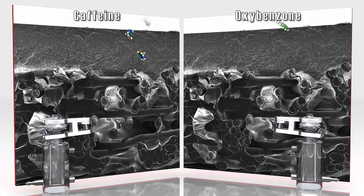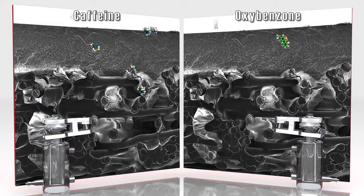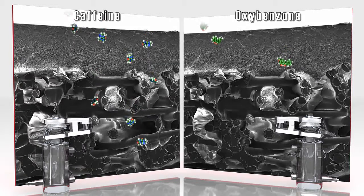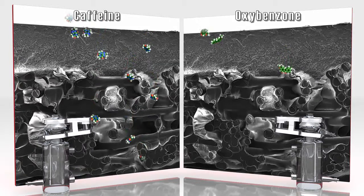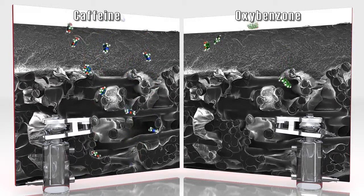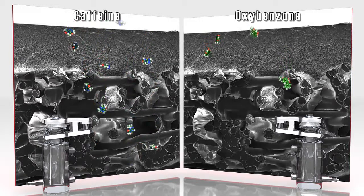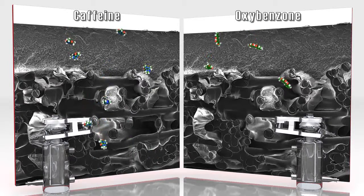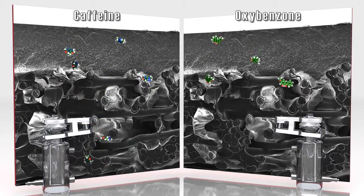Watch what happens to molecules after they're added to the donor compartment of a Franz cell containing Stratum membrane. In the case of caffeine, the analyte diffuses through the membrane the same way it would through human skin. In other cases, the membrane acts as an impermeable barrier, just like human skin, and analytes are trapped on the membrane.